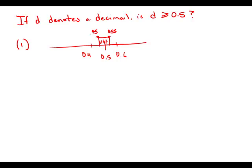But the point is, if we're rounding and getting 0.5, we don't know whether we're above 0.5 or below 0.5, because both values above 0.5 and below 0.5 can be rounded to 0.5. So this statement by itself is insufficient.